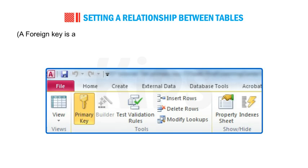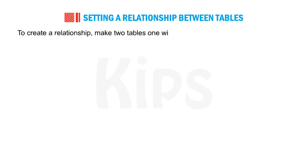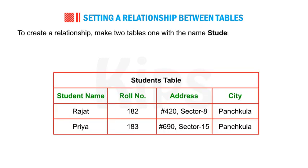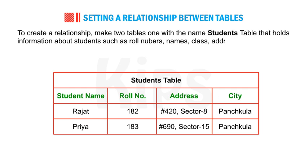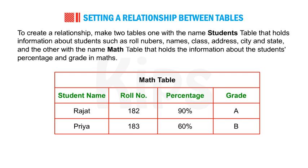A foreign key is a value in one table that must match the primary key in another table. To create a relationship, make two tables: one named Students Table that holds information about students such as roll numbers, names, class, address, city and state, and the other named Maths Table that holds information about the student's percentage and grade in maths.